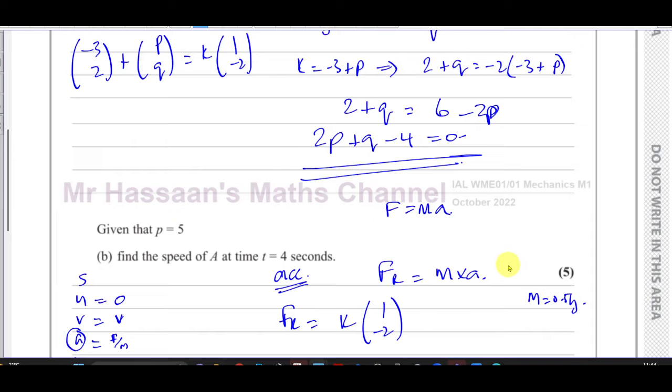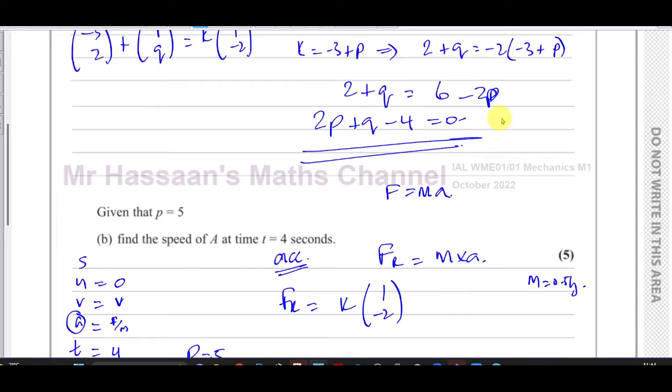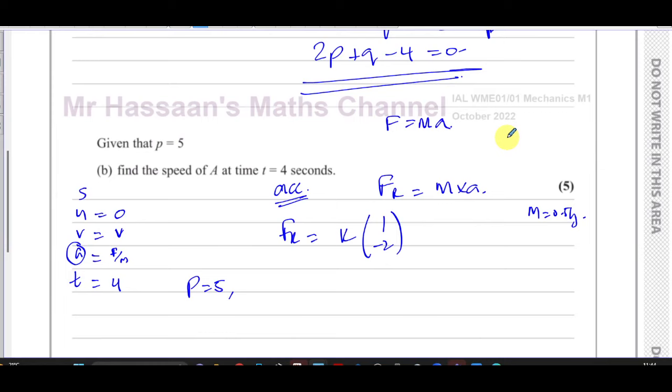We know that p equals 5. And if we look back here, we can say that minus 3 plus p equals k. So we have minus 3 plus p equals k. So k is equal to 2.